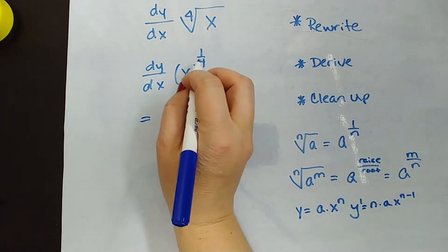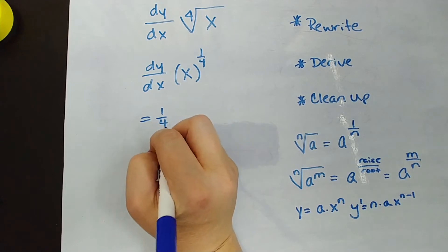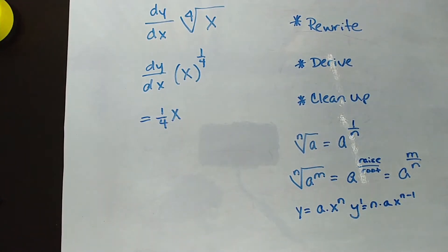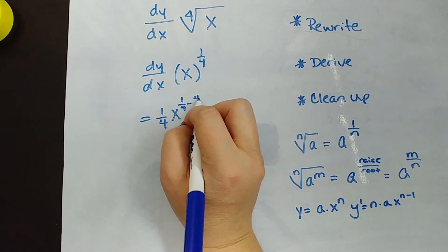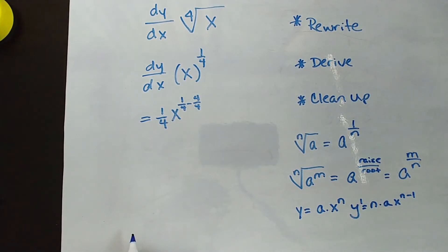So let's do this. We're going to bring down our one-fourth power. We're going to multiply it by x because there's nothing else there—there's a one, but that's not going to change anything. Then we're going to lower the exponent by one, so one-fourth minus four-fourths. It's a little ugly, but you've made it to calculus, you can certainly subtract some fractions. One-fourth x to the negative three-fourths.